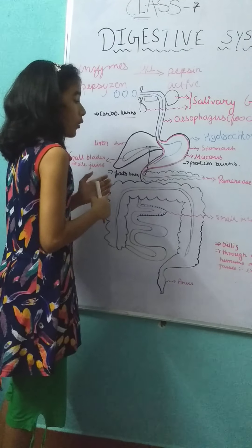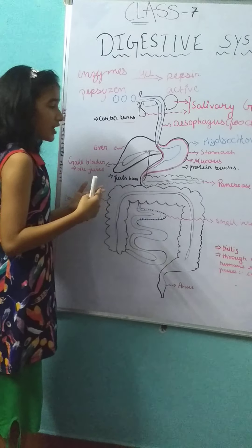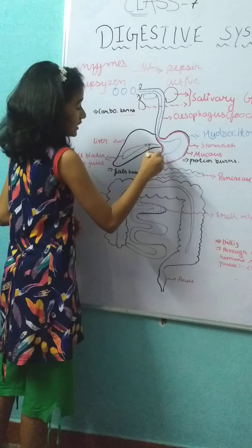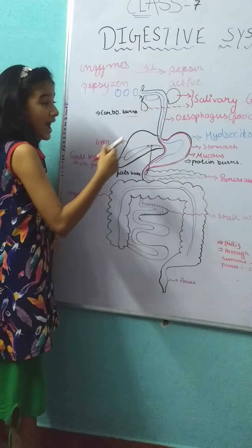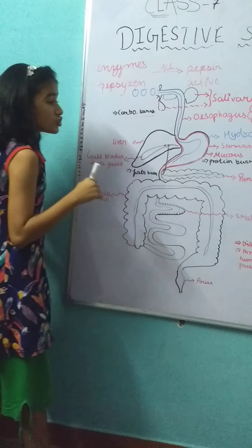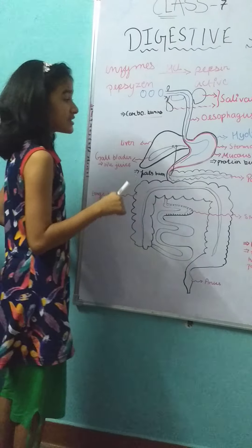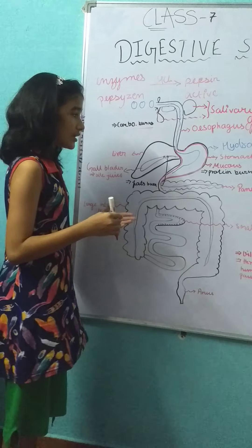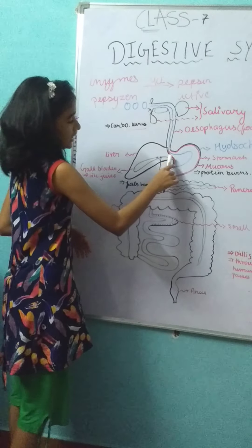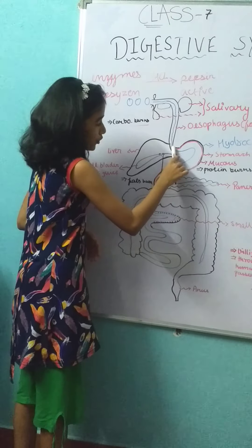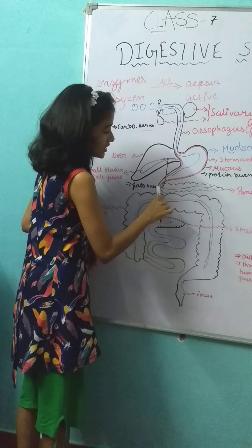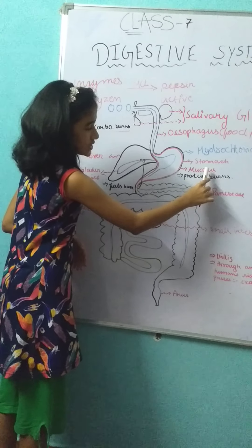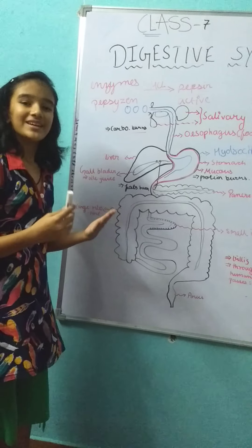Here is a very interesting thing about the stomach: the pepsin and the acid are so strong that they can digest the stomach itself. To protect the stomach, there is a thin layer known as mucus.